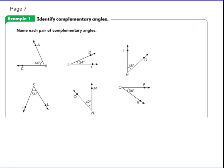The first example says: identify and name each pair of complementary angles. We're trying to find numbers that add together to make 90 degrees. Angle ABC is 66 degrees, and angle DEF — if I add those two together, they add to 90 degrees. So these are the first pair of complementary angles.